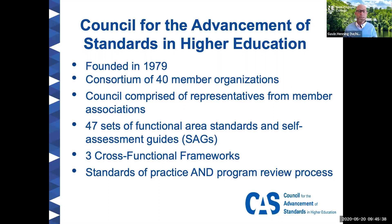Currently, we have 47 sets of functional area standards. These are for specific departments or units, such as housing, residence life, campus police, and student activities. We also have self-assessment guides for each of those, and these self-assessment guides are worksheets really for the self-assessment process, which I'll talk about in a minute.